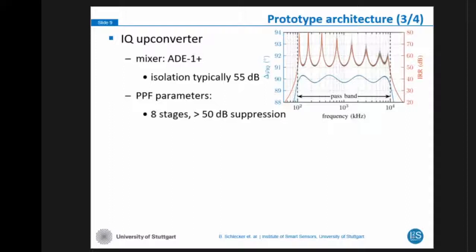For the mixer, we use the ADE1, which is a commercially available mixer with a typical isolation of 55 dB. We said we want to have at least 50 dB suppression of the unwanted sideband and overall a good signal-to-noise and distortion ratio. With eight stages, we achieved this specification. You can see here the simulation — the Monte Carlo simulation — with all the parasitics of our system.